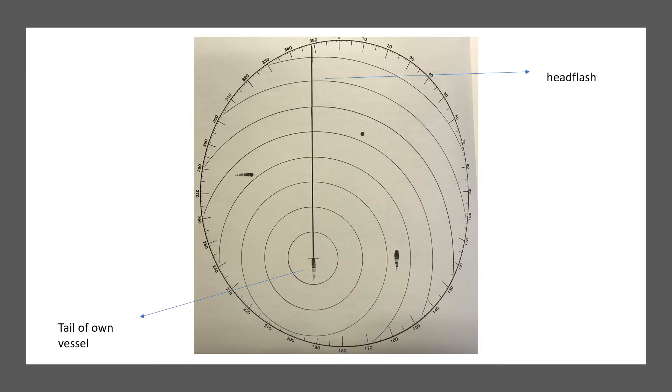This type of situation when viewed on the true motion radar would appear as in this figure. The first thing is that the picture appears to be off-center. This is correct and normal, and in fact when using true motion, you will find that the picture is almost never centered.